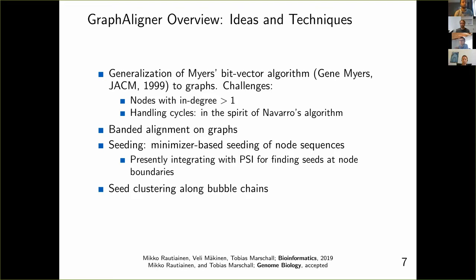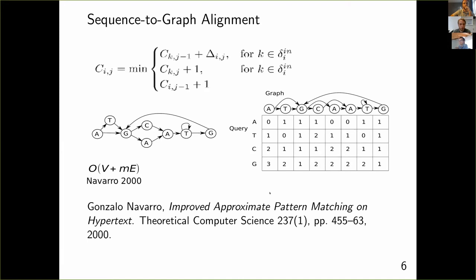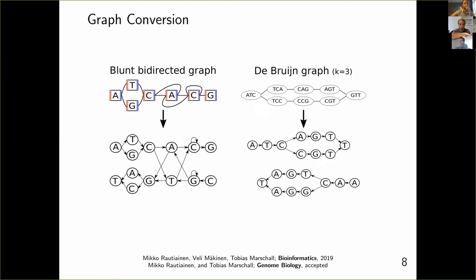One technical detail: to handle all graphs with overlapping or non-overlapping labels, Graph Aligner converts the input graph — whether it's a blunt graph, de Bruijn graph, or any other — to an internal directed representation. Any bi-directed input graph is converted to a directed representation by duplicating nodes as needed.